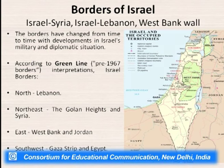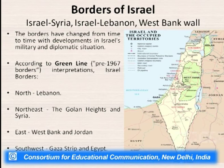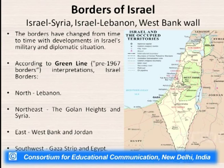The example of Israel's borders is very much relevant today, as Israel has border disputes with different countries. Israel's borders touch: Lebanon in the north, the Golan Heights and Syria in the northeast, the West Bank and Jordan in the east, and the Gaza Strip and Egypt in the southwest. A green line was established representing the pre-1967 borders. Israel's borders have changed from time to time with developments in its military and diplomatic situations.